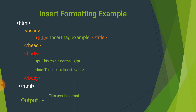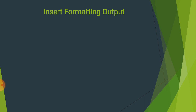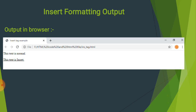File save करने के बाद output इस प्रकार से आया — 'This text is normal' normal paragraph के रूप में था, और 'This text is insert' यानी underline के रूप में browser पे show होगा। Browser पे output देखते हैं — 'Insert tag example' title आया, 'This text is normal' p tag का example था, और 'This text is insert' underline की रूप में browser पे show हो रहा है।